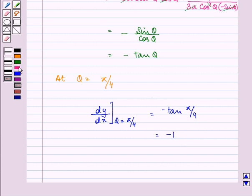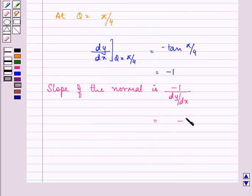Now we know that since slope of the normal is minus 1 upon dy by dx, that means it will be equal to minus 1 upon minus tan pi by 4, whose value we have found out above as minus 1.